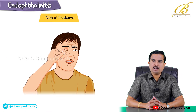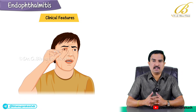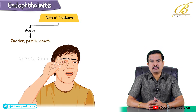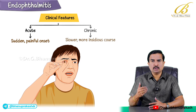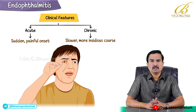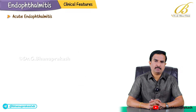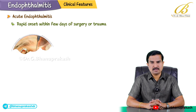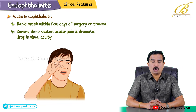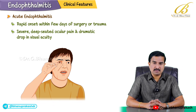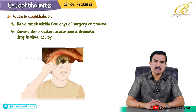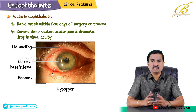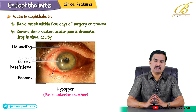The clinical features of endophthalmitis can vary from a sudden painful onset (acute) to a slower, more insidious course (chronic). In acute endophthalmitis, there is rapid onset of symptoms, often within a few days of surgery or trauma, with severe deep-seated ocular pain and a dramatic drop in visual acuity. Redness, lid swelling, corneal haze or edema, and hypopyon in the anterior chamber are the most common features.